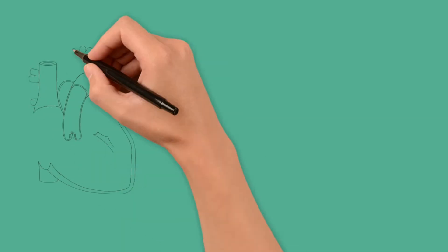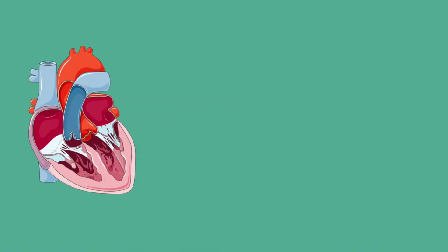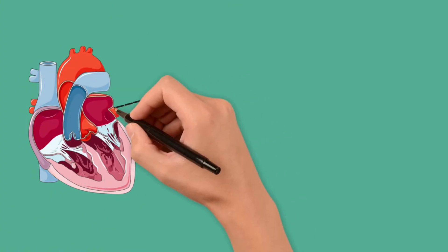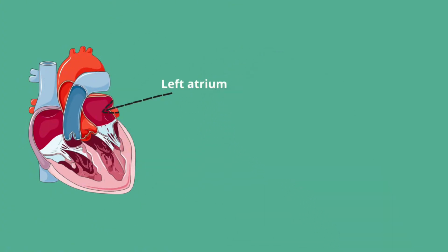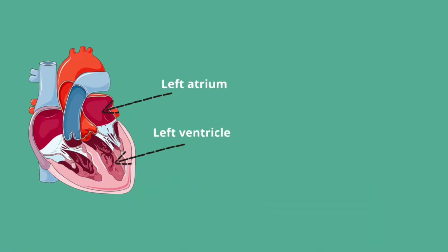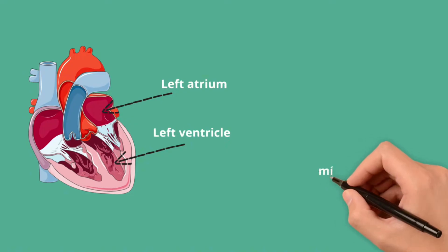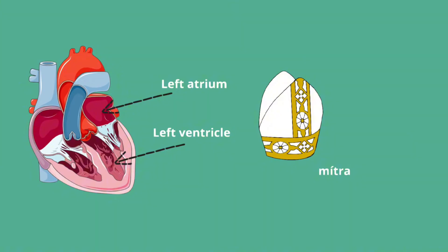The mitral valve is situated between the left atrium and left ventricle. Its purpose is to allow the forward flow of blood from the left atrium to ventricle in ventricular diastole, and to prevent the backflow of blood into the left atrium in ventricular systole. The name mitral comes from the Greek mitra, referring to the mitre shape of the bishop's hat, which is felt to resemble the valve's morphology.